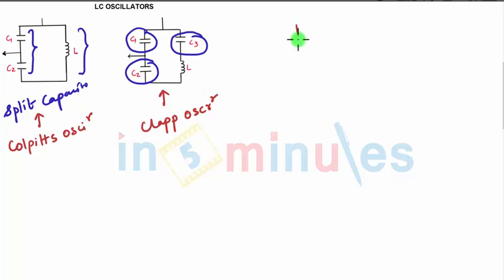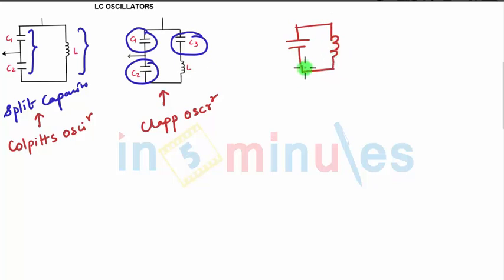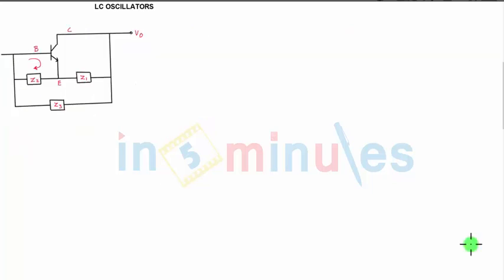The basic circuit has a capacitor and an inductor. Depending on the frequencies and the different types of splitting — splitting the capacitor or splitting the inductor — we have different names for the oscillators. Now coming to the basic LC oscillator configuration.